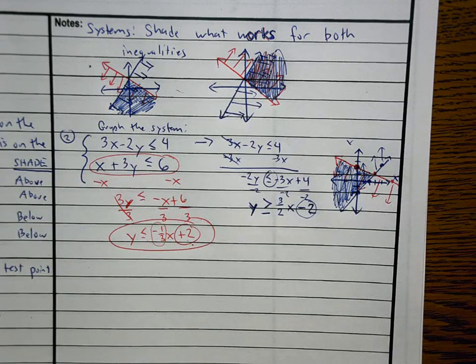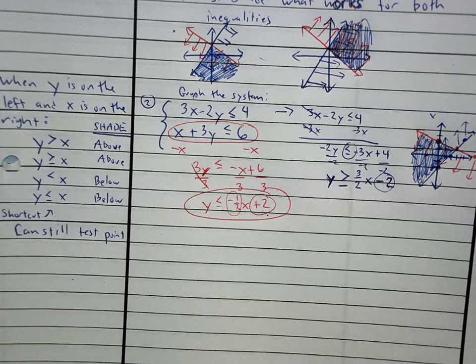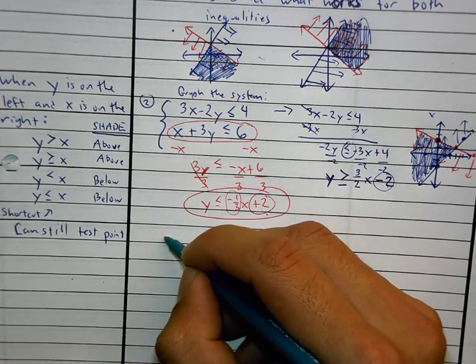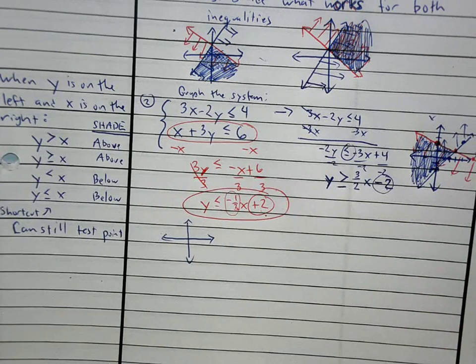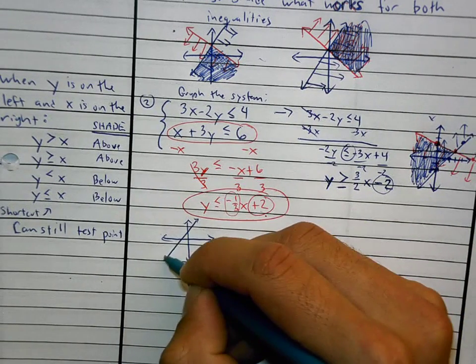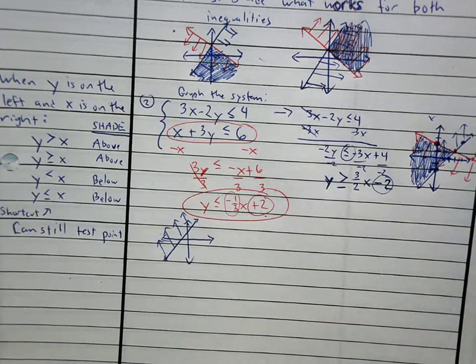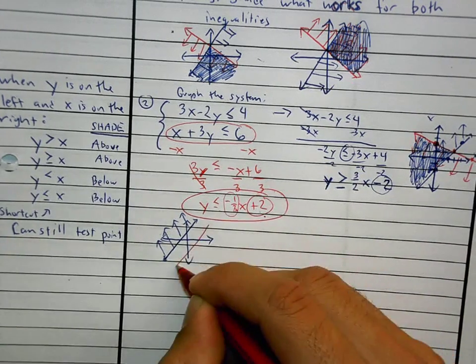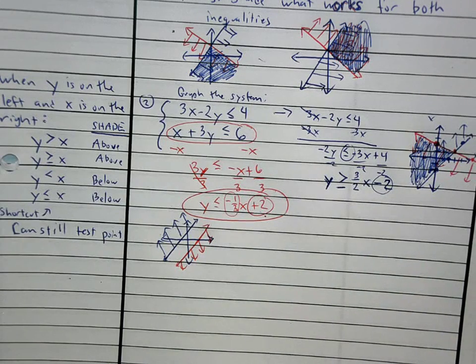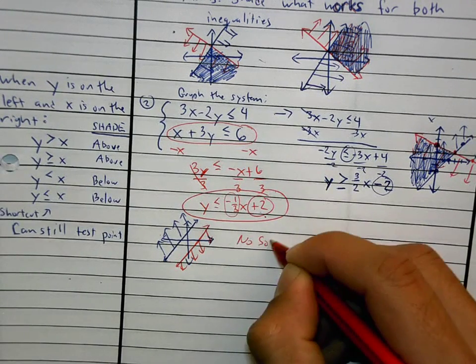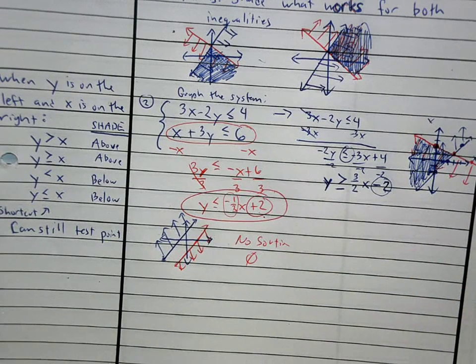The last thing that we're going to do is to talk about the one possible trick question. What if you had two graphs and you had one graph over here like this and you were shading above it, and you had another graph over here like this and you were shading below it. What works for both? There is a possible no solution with this stuff as well. If you're trying to solve a system and you're doing above one and below another and they do not intersect, they're going in opposite directions, you can also have a no solution with that as well.